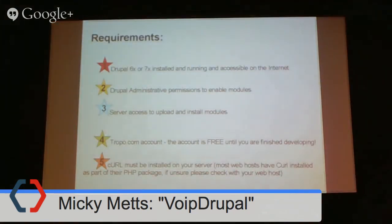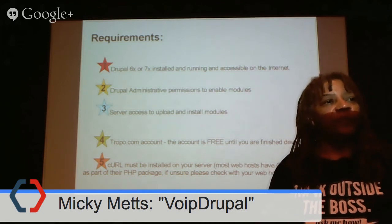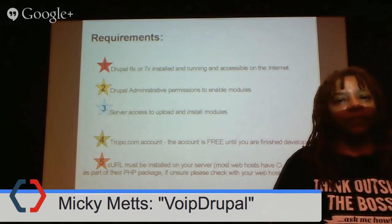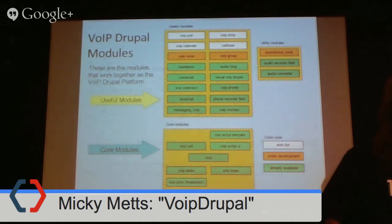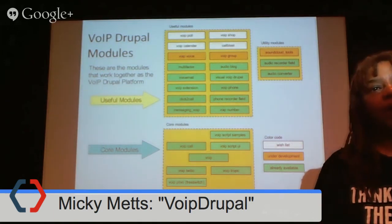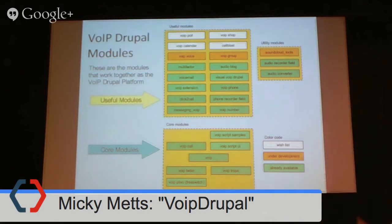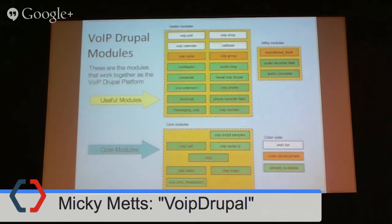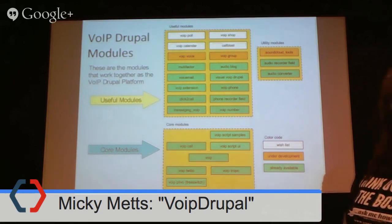There are very simple requirements. The only one I've ever had anyone take an issue with is having curl installed on their server, but today pretty much all server hosts are running curl. These are the Drupal modules. VoIP Drupal is a suite of modules that all work together — you don't have to enable or even download them all. The core modules are all in one package when you download it, including VoIP Call, VoIP Core, and the modules that interact with the VoIP service providers.